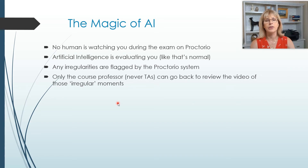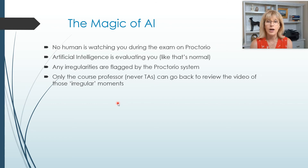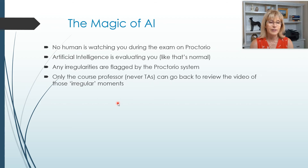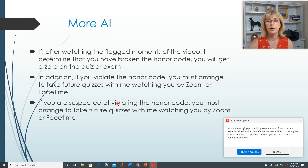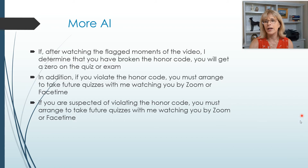So if it has flagged you as, for example, looking away from the screen too often, then I can go back in and evaluate that and decide whether you were violating the academic honesty policy for this course or not. If I watch the flagged moments of the video and I see that you were using your cell phone — you're not allowed to use your cell phone — then you'll get a zero on the quiz or the exam.